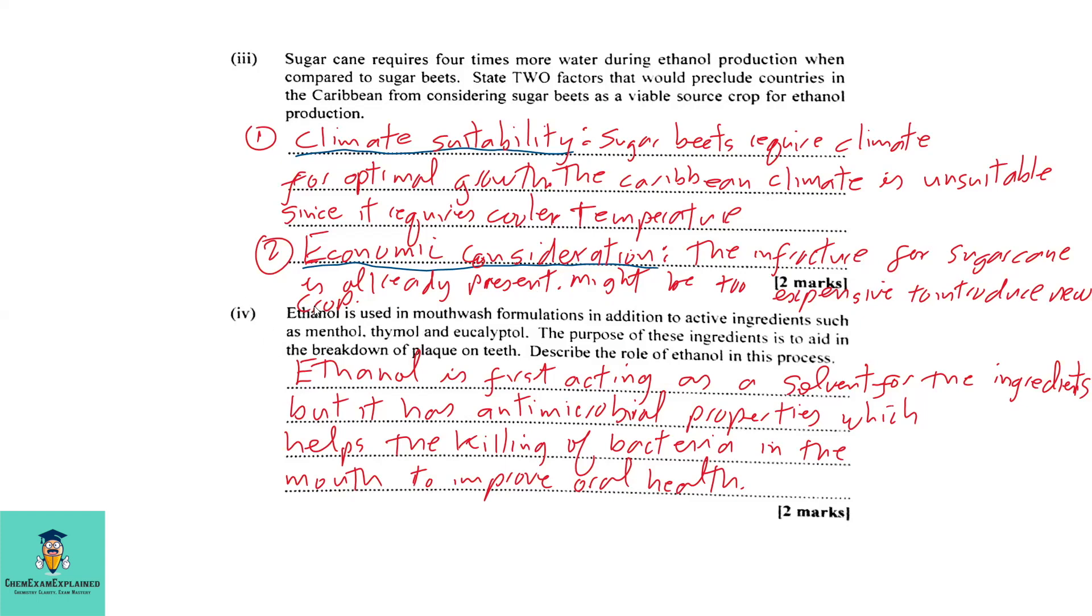Part 4: Ethanol is used in mouthwash formulations in addition to active ingredients such as menthol, thymol, and eucalyptol. The purpose of these ingredients is to aid in the breakdown of plaque on teeth. Describe the role of ethanol in this process. Ethanol is first acting as a solvent for the ingredients, but it has antimicrobial properties as well, which will help in the killing of bacteria in the mouth to improve oral health.